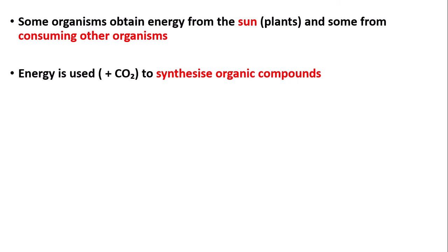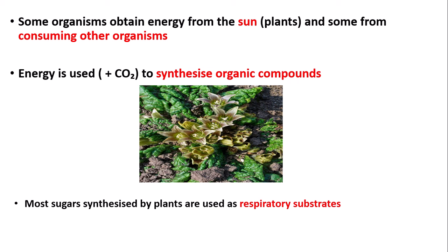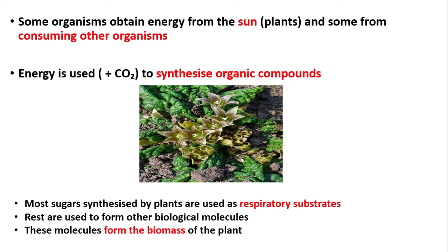This energy is used, along with carbon dioxide in the case of plants, to synthesize organic compounds. In the case of plants, most sugars synthesized by photosynthesis are used as respiratory substrates. The rest of the sugars that aren't used as respiratory substrates are used to form other biological molecules such as lipids and proteins. These molecules form what we call the biomass of the plant.